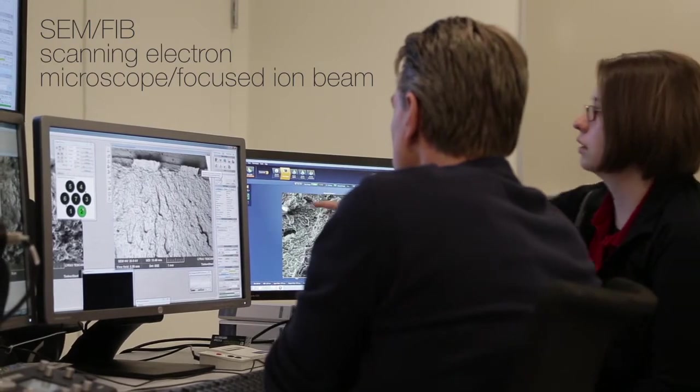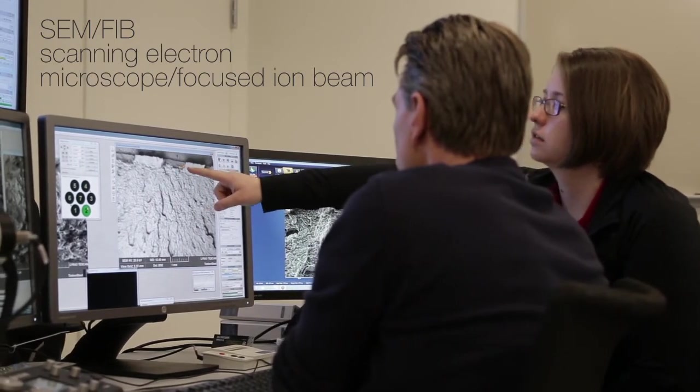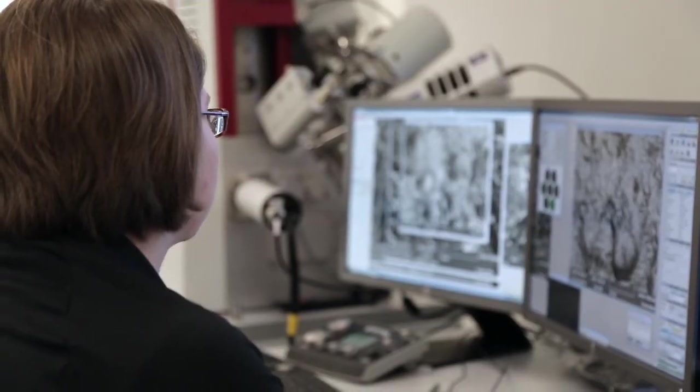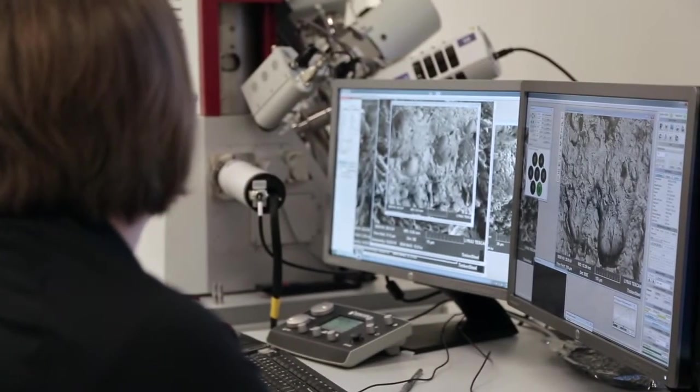What you see here is a field emission SEM FIB system that we use to evaluate inclusions. We can get chemical composition as well as mill through this inclusion and get a 3D depiction of it.